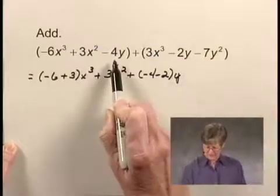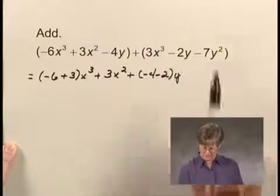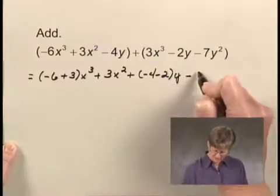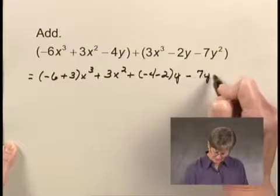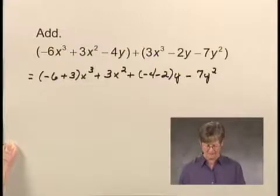Now, we've dealt with all of the terms in this expression, and we've dealt with this one and this one, but we have a y squared term that we haven't taken care of yet, and it's just a term that doesn't have any other like term in the expression. So we'll just write minus 7y squared there.